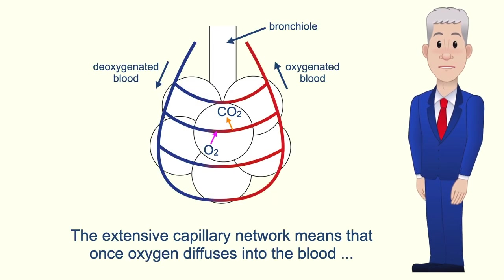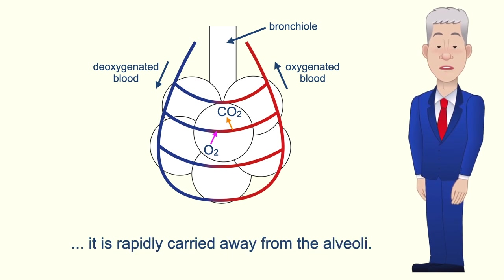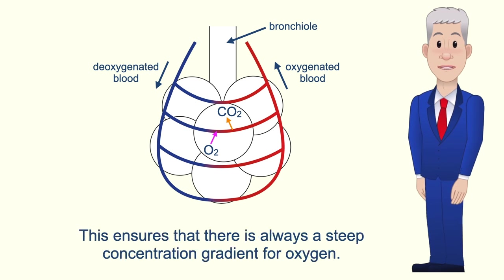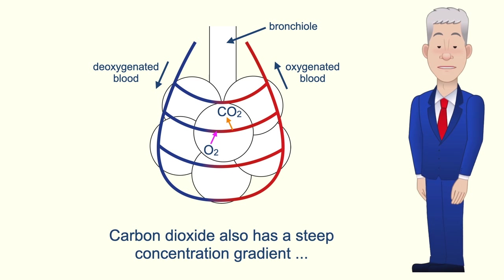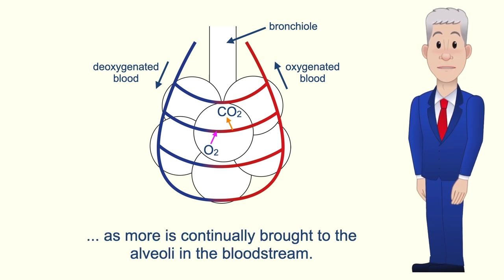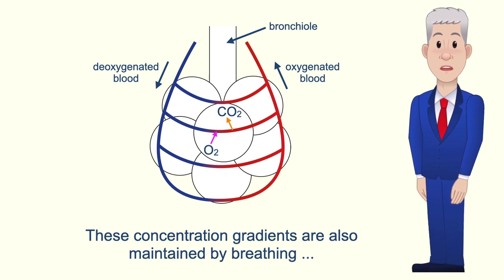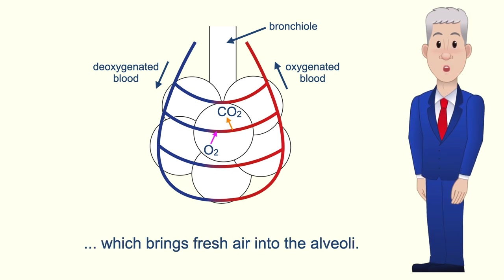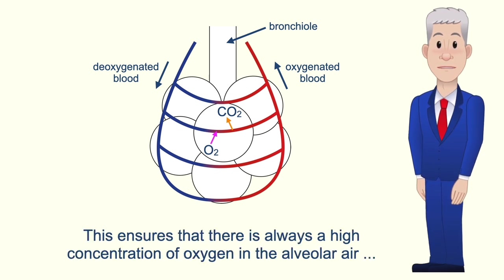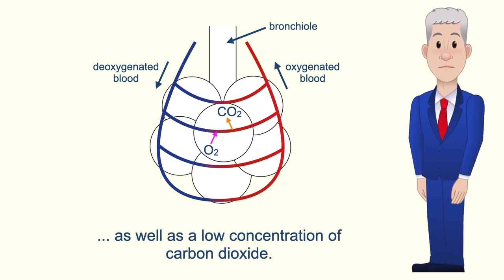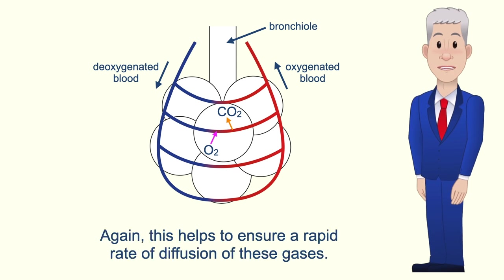The extensive capillary network means that once oxygen diffuses into the blood, it is rapidly carried away from the alveoli, ensuring there is always a steep concentration gradient for oxygen. Carbon dioxide also has a steep concentration gradient as more is continually brought to the alveoli in the bloodstream. These concentration gradients are also maintained by breathing, which brings fresh air into the alveoli, ensuring a high concentration of oxygen and a low concentration of carbon dioxide, helping to ensure a rapid rate of diffusion.